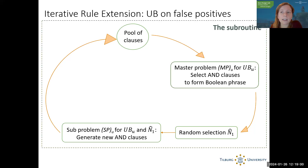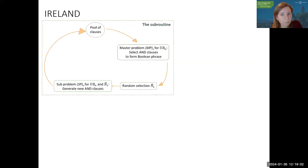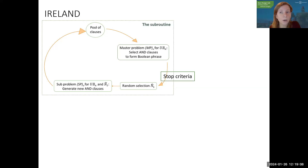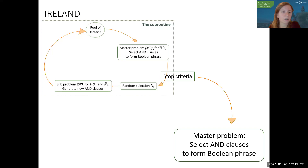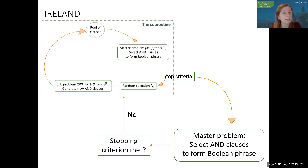This subroutine forms the basis of IRELAND. We have stopping criteria related to improvement per iteration or the objective value. When stopping criteria are met, we solve the original master problem minimizing total error, and keep going until all stopping criteria are met. That's the general idea of IRELAND.